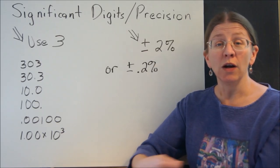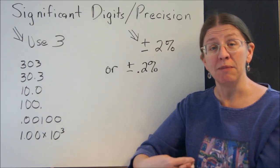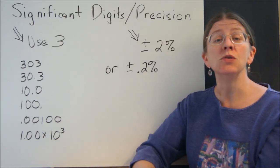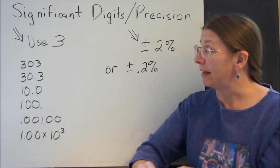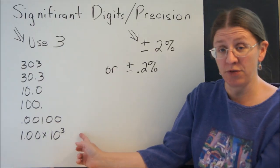One of the ways that we're going to actually make sure that you're keeping that in mind is by asking you to use 3 significant digits in your answer. Now what I mean by that is, these are all examples of 3 sig figs.